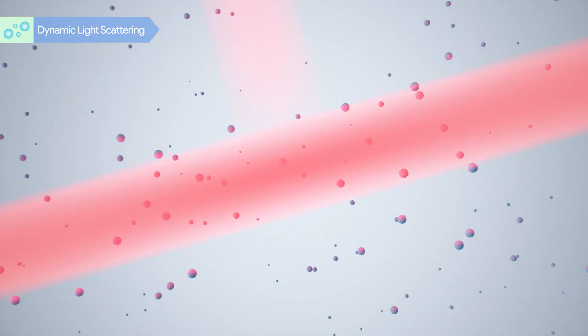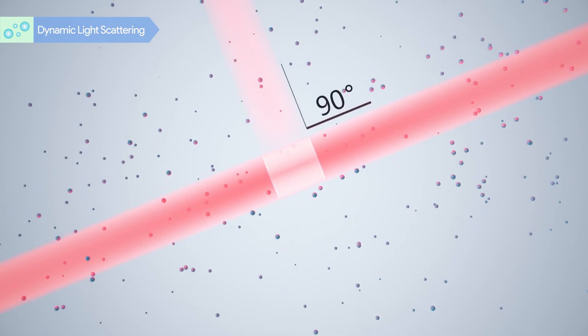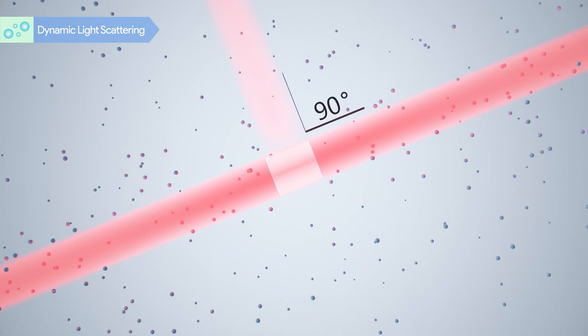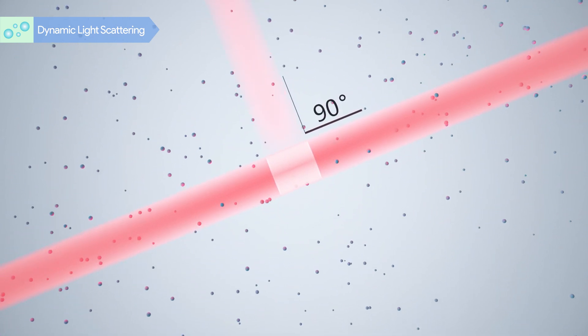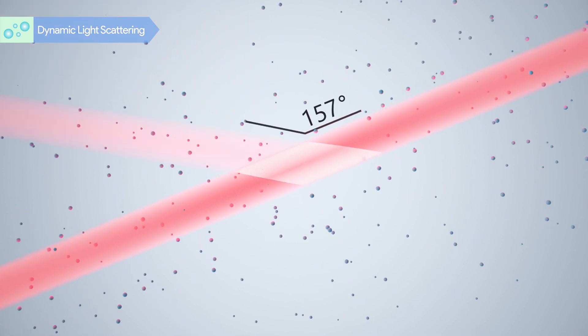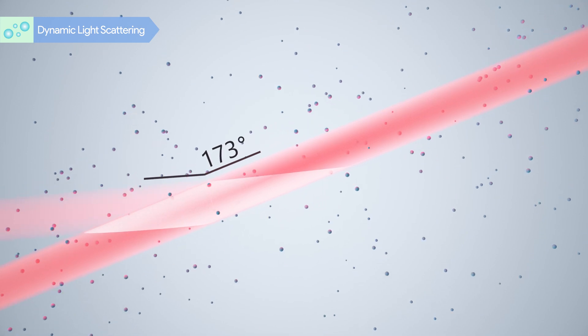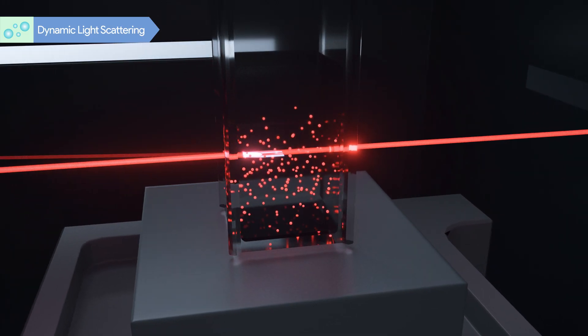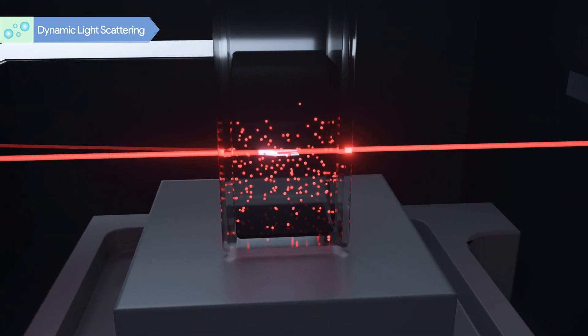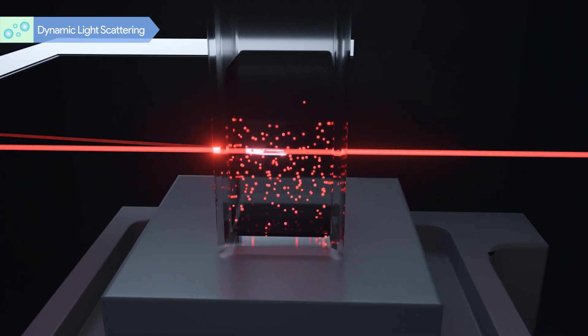The more advanced backscattering DLS technology adopted by B-Nano enables the detection of the scattering light at 173 degrees with a much larger scattering volume. Combined with the movable measurement position, B-Nano has much higher sensitivity and high turbidity sample measurement capacity.